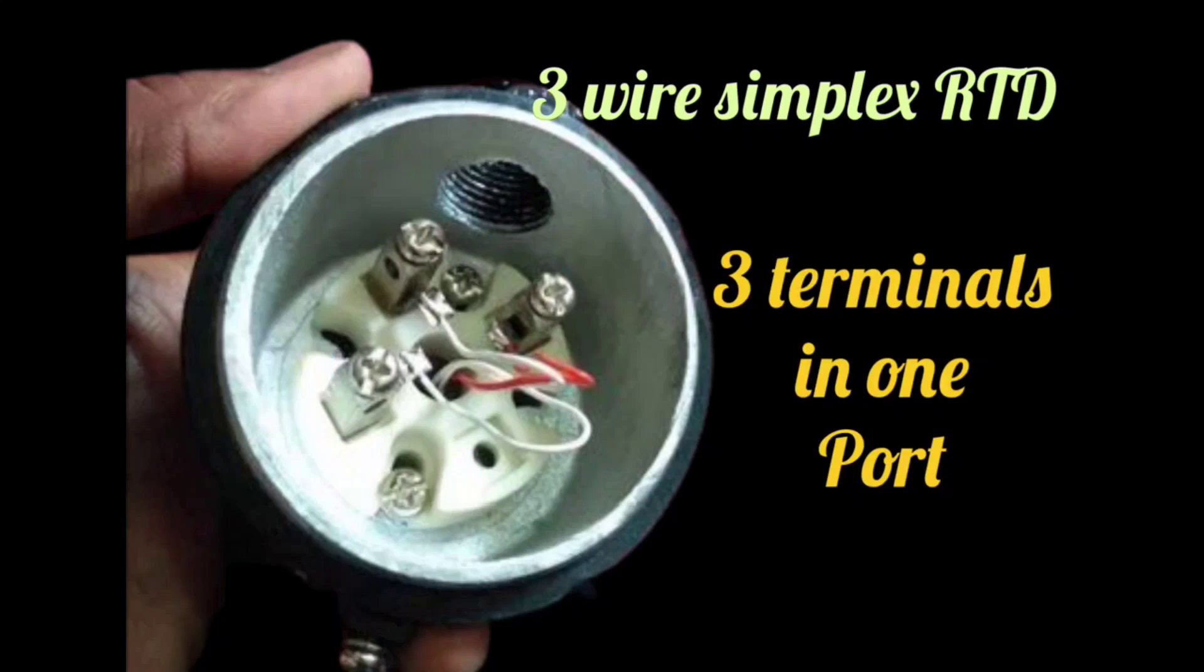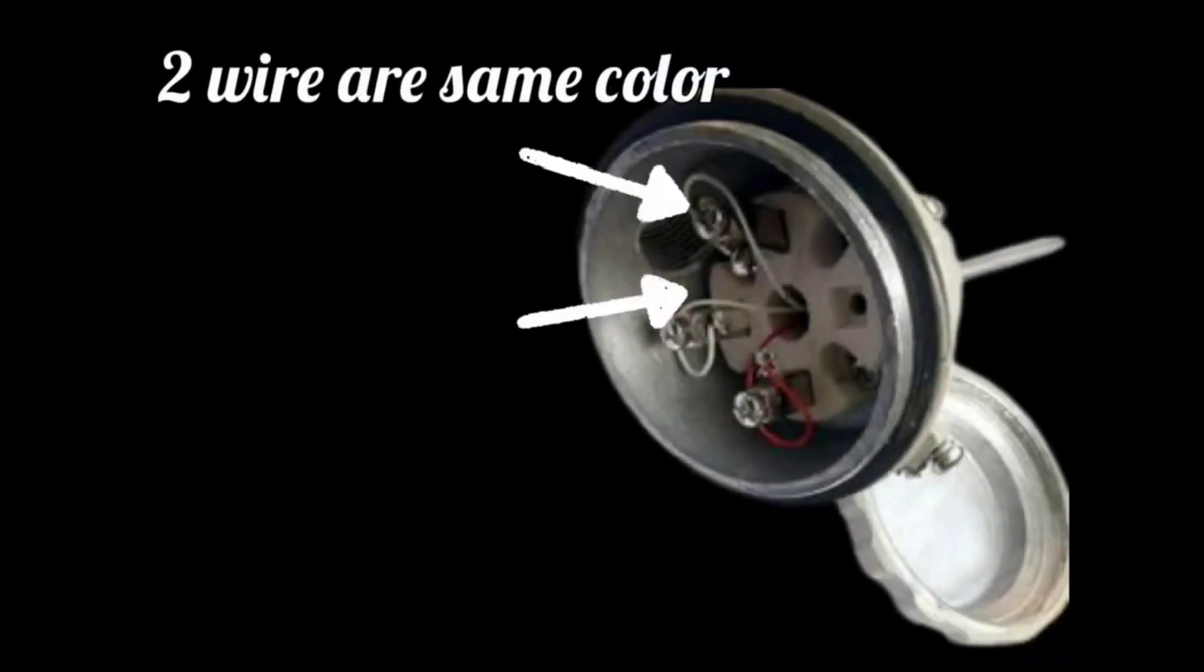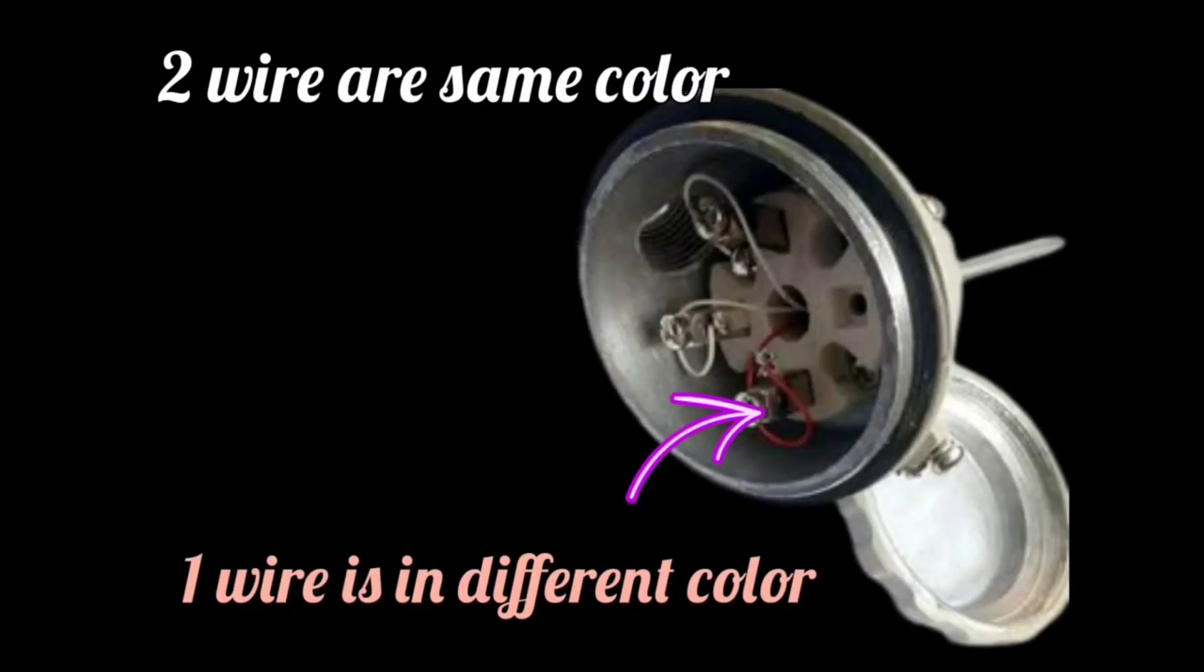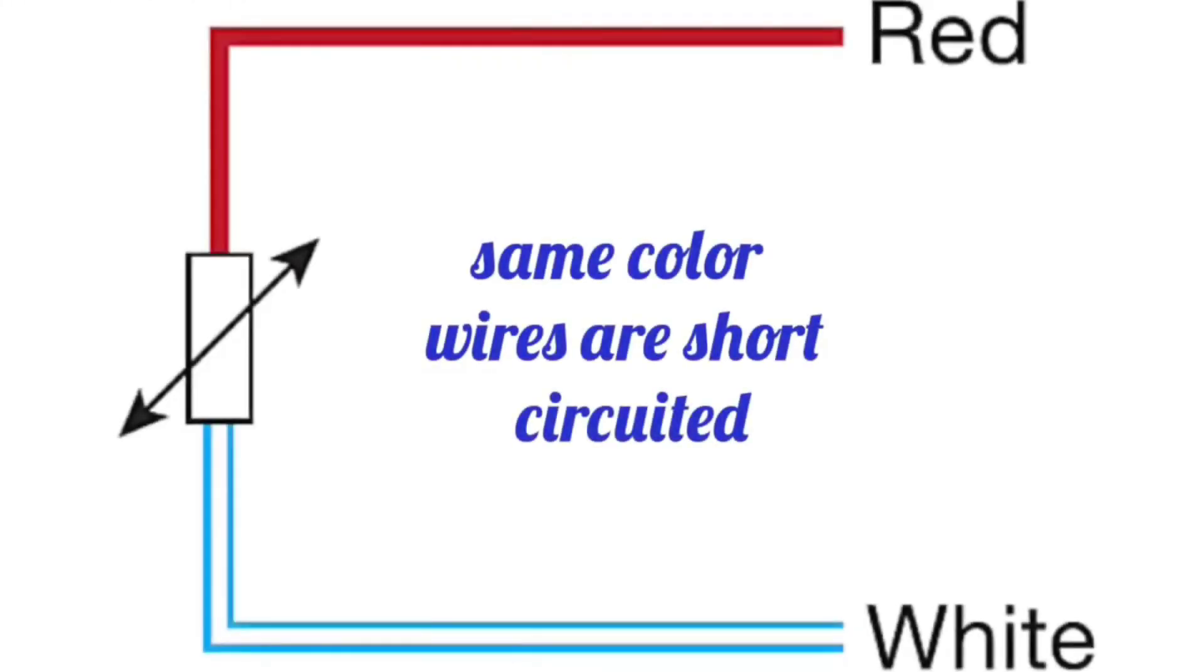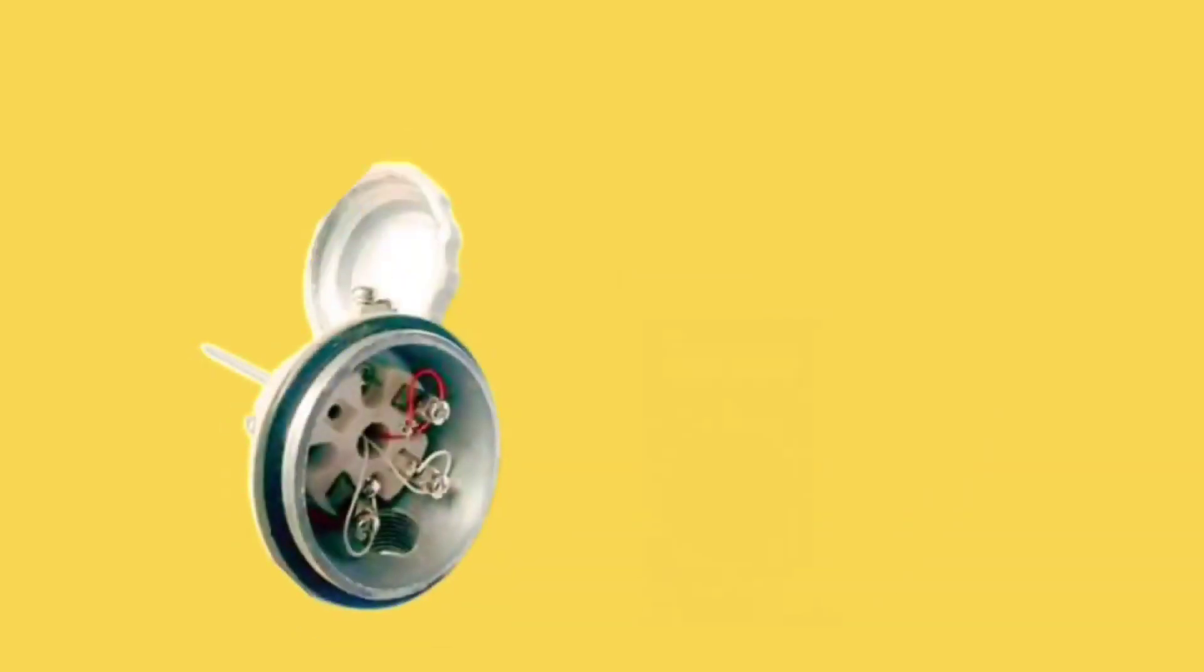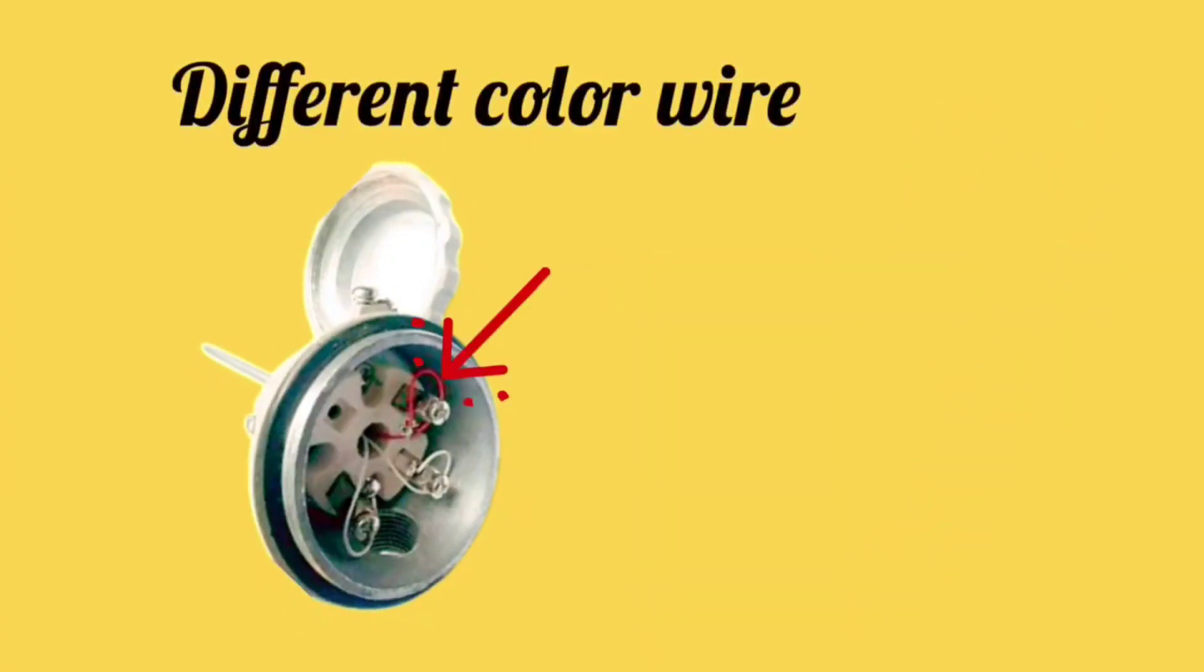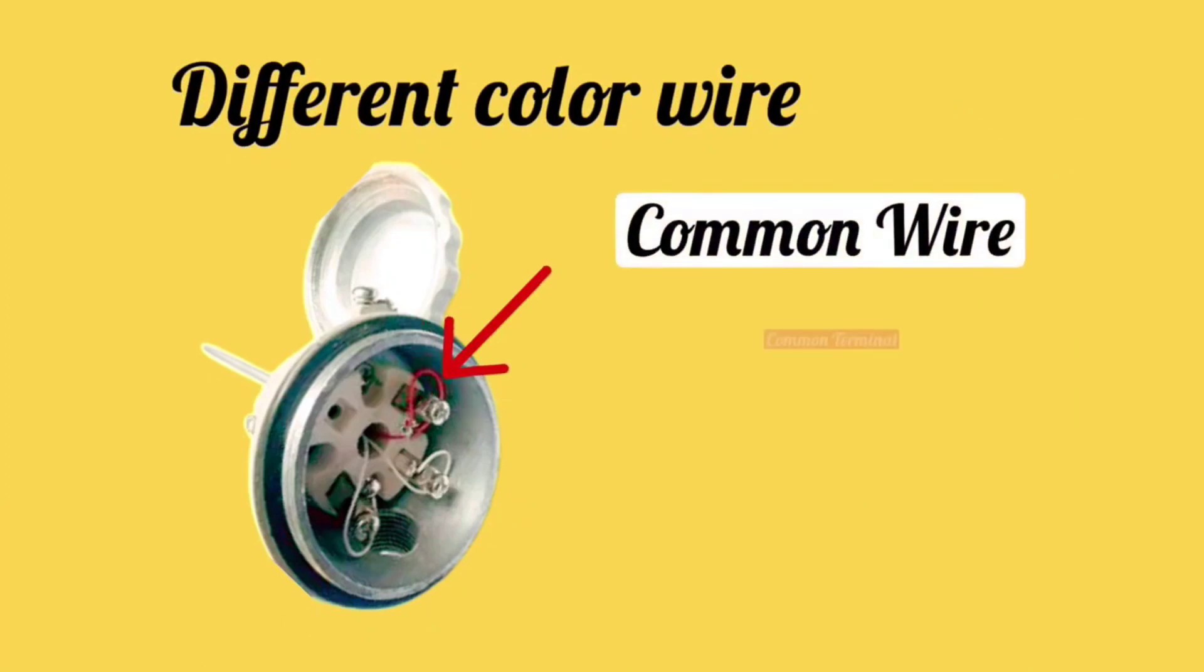And on these terminals, three wires will be connected from inside the RTD. In these wires, two wires will have same colors, and one wire will have different color. Same color wires are kept short circuit. You can check their continuity by using multimeter. And there will be a different color wire, it is also known as common wire or common terminal.